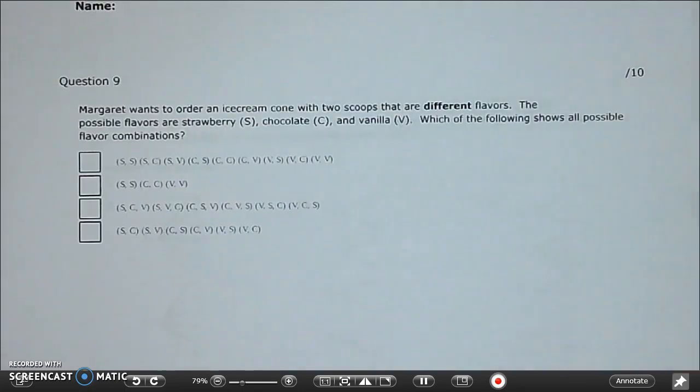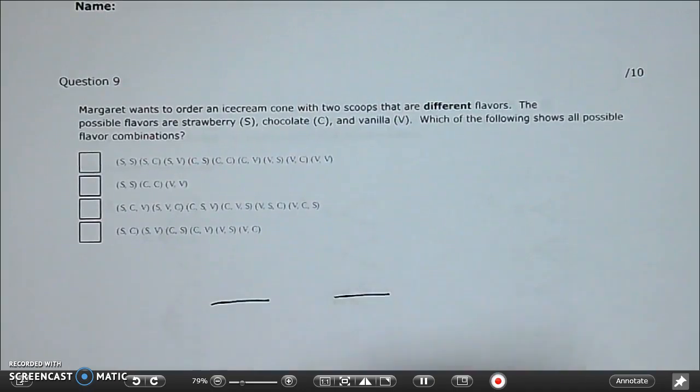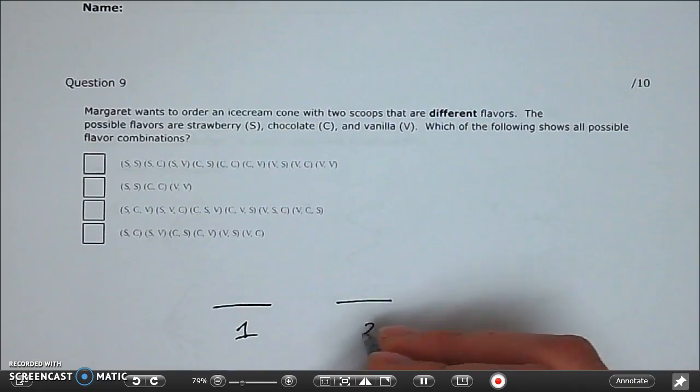Question number nine. Margaret wants to order an ice cream cone with two scoops that are different flavors. Possible flavor choices are strawberry, chocolate, and vanilla. Which of the following shows all possible flavor combinations? So she has two scoops. Scoop one, scoop two. How many options does she have for scoop number one? Well, she has strawberry, chocolate, and vanilla.